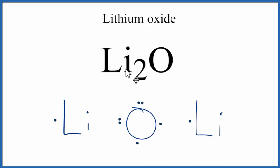So we said the metal would transfer valence electrons to the non-metal. So the lithium here will transfer one valence electron to the oxygen, and then this lithium will transfer the other.